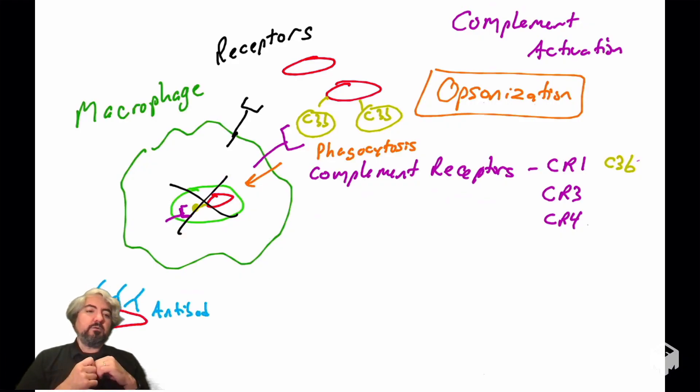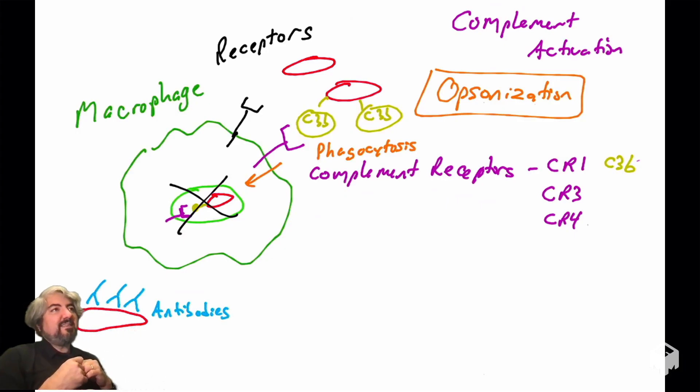We will introduce in this video the idea that you can cover pathogens in other things that make them more attractive to phagocytes such as macrophages. Here I've drawn a pathogen covered in antibodies. In later videos, we'll talk about humoral immunity and how B cells can produce antibodies that bind molecules with very high affinity on the surface of a pathogen.